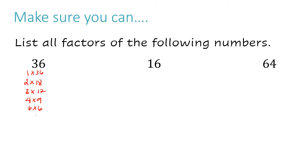Now, remember: whenever you're multiplying factors, if you make both factors negative, they still equal a positive. So I can turn all of these positive factors into their negative form and it would still give me 36. All of these could be converted to their negative version and you'd still get 36, because a negative times a negative is a positive.